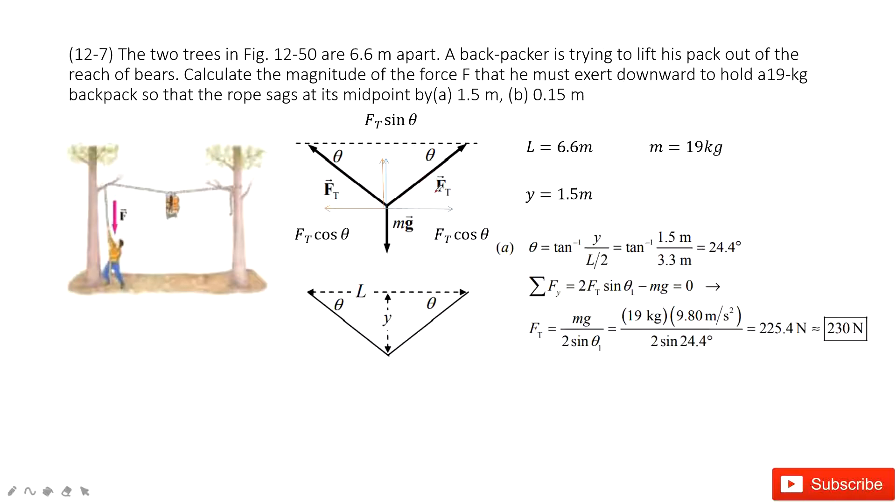And then we can project the ft in x-component and y-component at each side. Now in this one, we want to keep the object balanced in the y-component because the x-component, this side ft cosine theta at the left-hand side, this one is ft cosine theta at the right-hand side, they are equal.